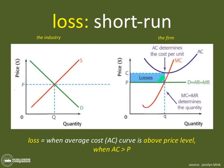We know this is a loss because it is not until this price level C that we cover all of our costs — or average costs — for producing at this quantity. Therefore, this firm is going to be showing a loss.